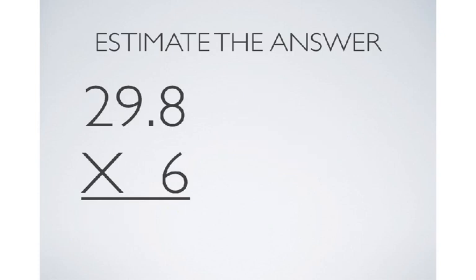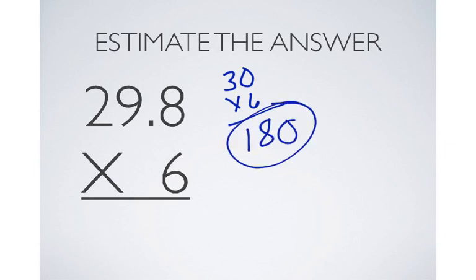Here's another example. 29.8 times 6. Again, I want to make my decimal a whole number that's really easy to work with. 29.8 is really close to 30. And if I were to multiply that by 6, my estimated answer would be 180.